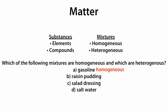B, raisin pudding. Raisin pudding has raisins spread out randomly throughout the pudding. So that is a mixture of pudding and raisins, which is non-uniform in appearance. So that is a heterogeneous mixture.